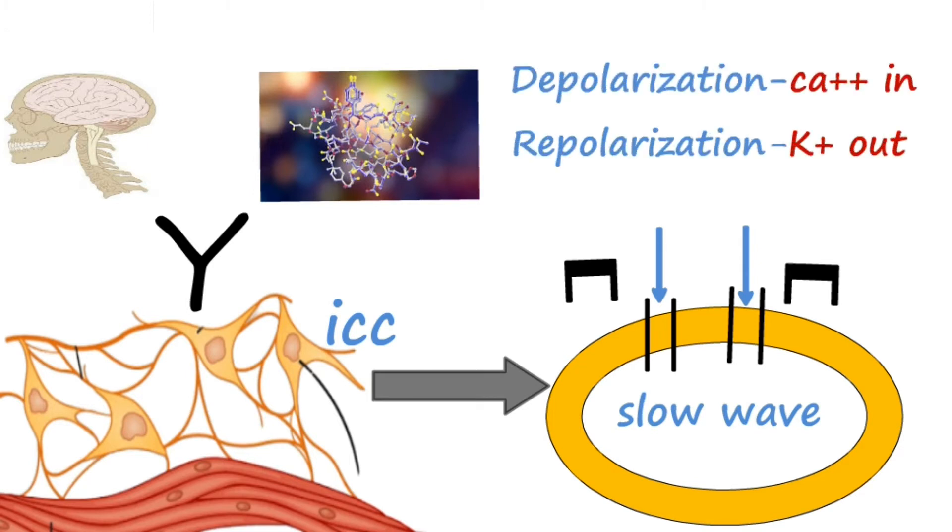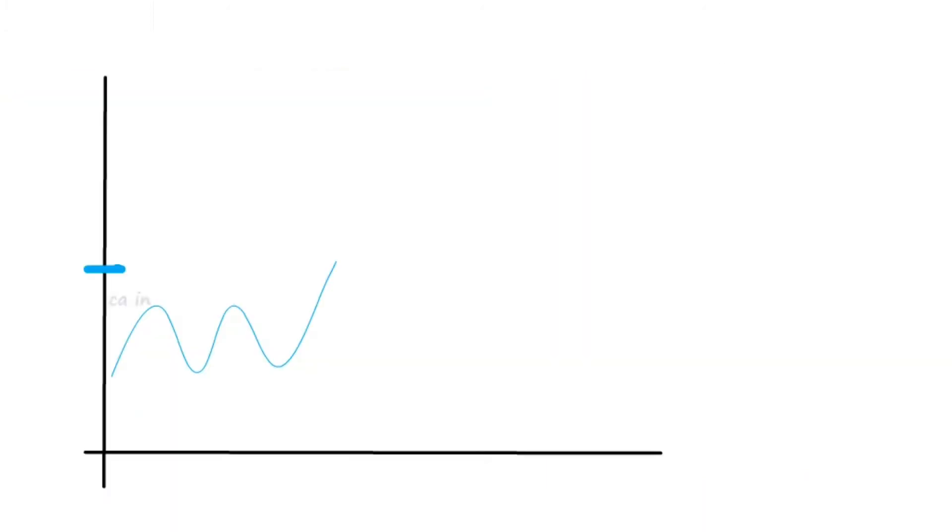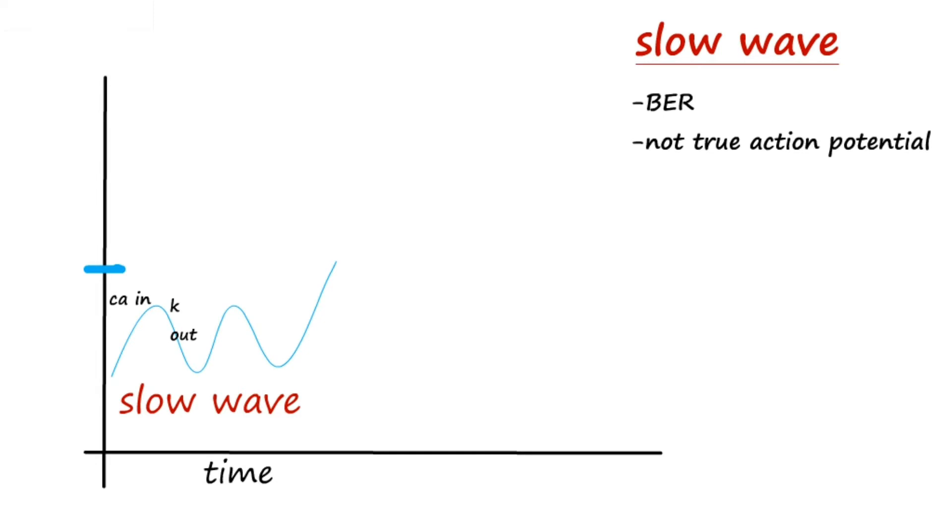while repolarization is due to potassium efflux. The slow wave produces rhythmic contractions, hence known as the basal electric rhythm. But remember, these are not true action potentials and they do not cause contraction directly.